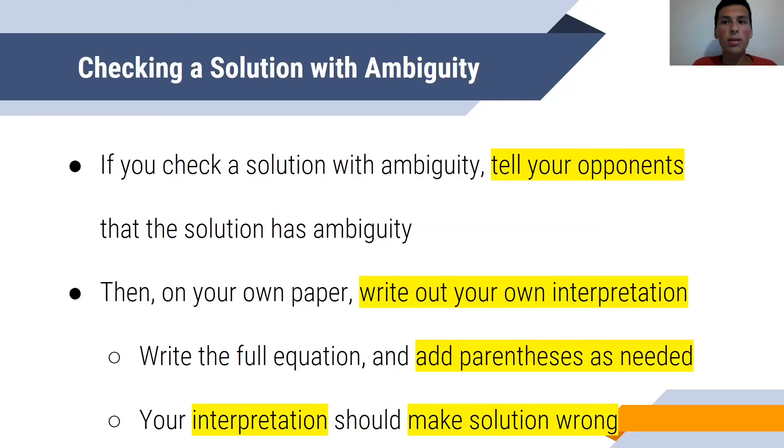Now, when it comes to checking a solution with ambiguity, if you check a solution that has ambiguity, tell your opponents that the solution has ambiguity. Then, on your own paper, write out your own interpretation, because you need to prove that there's another interpretation of their solution that does not equal the goal. Write out the full equation and then add parentheses as needed to make your own interpretation.